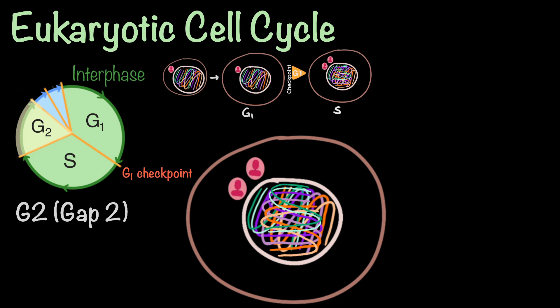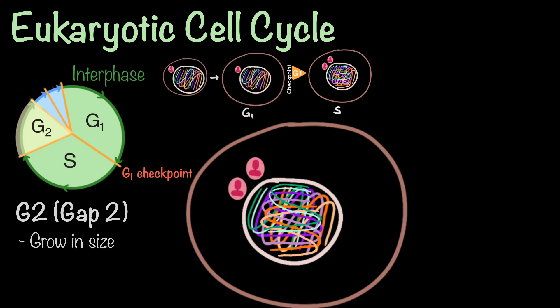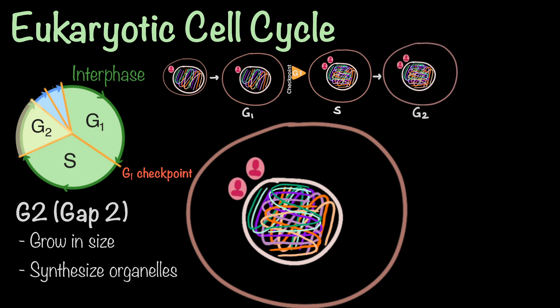Next, the cell enters the G2 phase. Here, the cell grows in size and prepares for mitosis by synthesizing additional organelles, such as mitochondria and ribosomes. The G2 phase is crucial for confirming that the cell has accurately replicated its DNA and that all necessary components are in place for successful cell division.